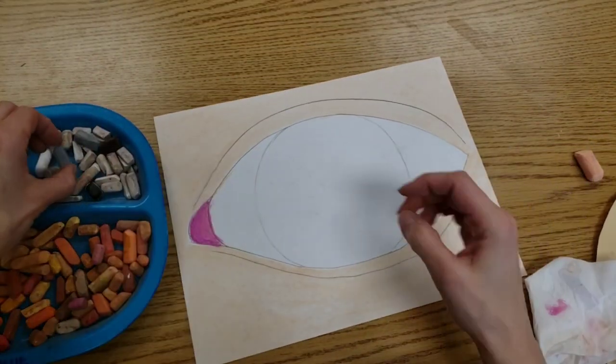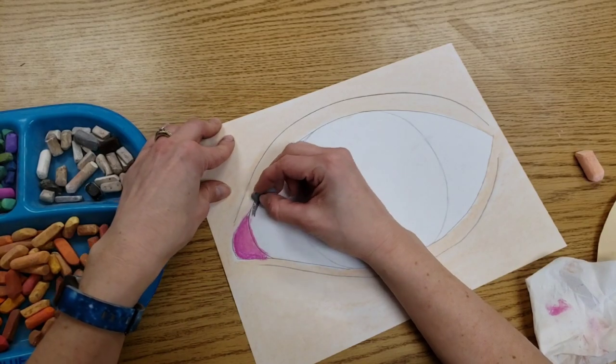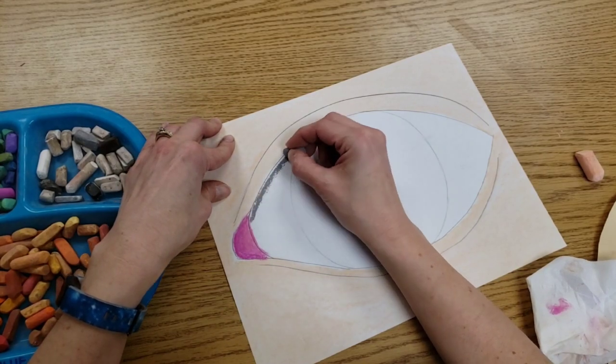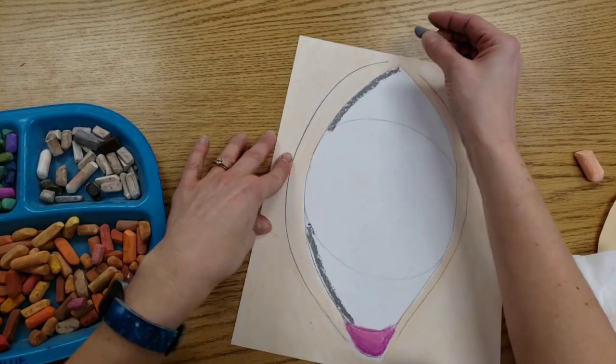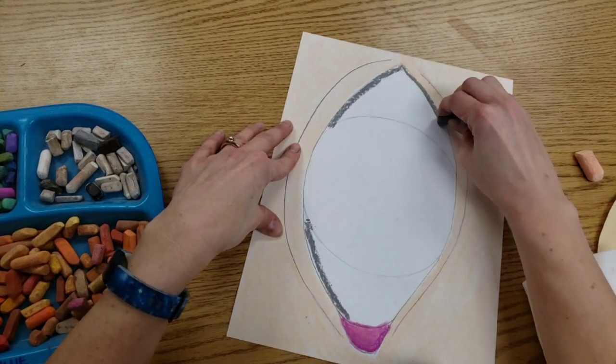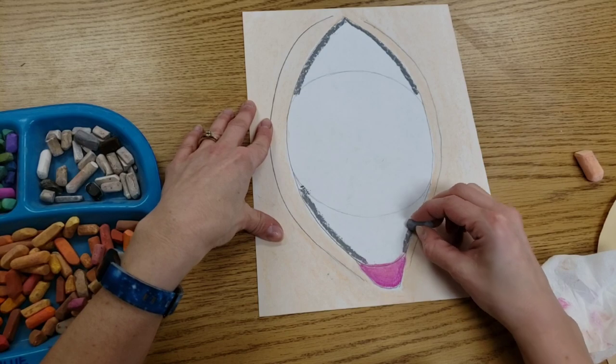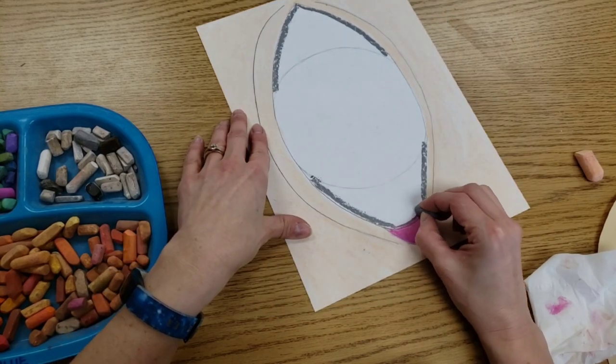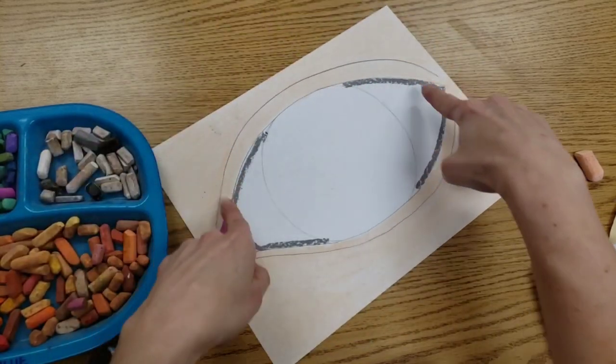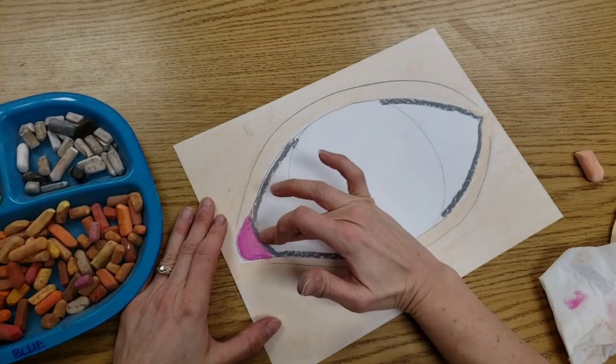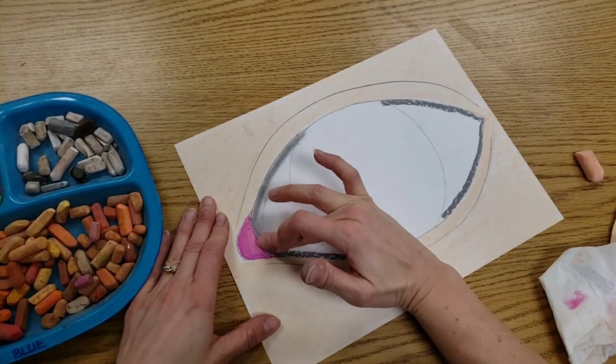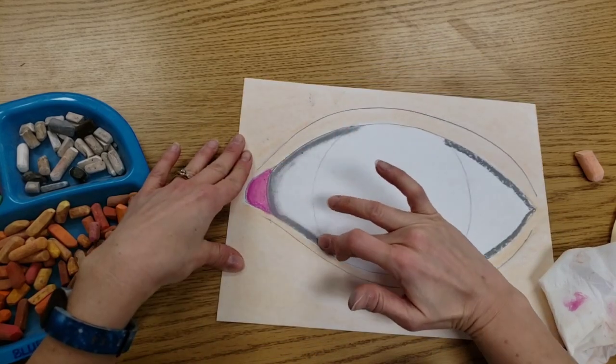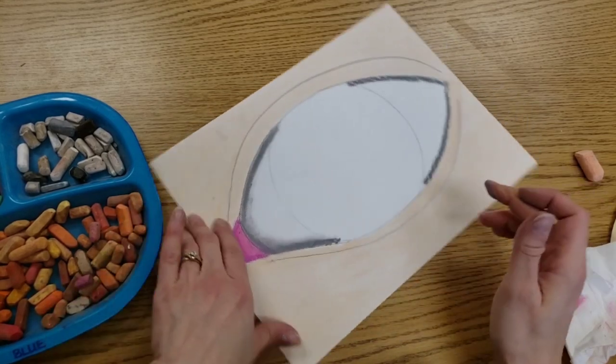We do want your eye to have a little bit of shadow. So I'm going to trace with some gray. Notice I'm not on the circle. I'm going to leave the circle alone for now. Tracing with some gray on the outside edges. And blend that with my finger. I'm following the line when I blend.